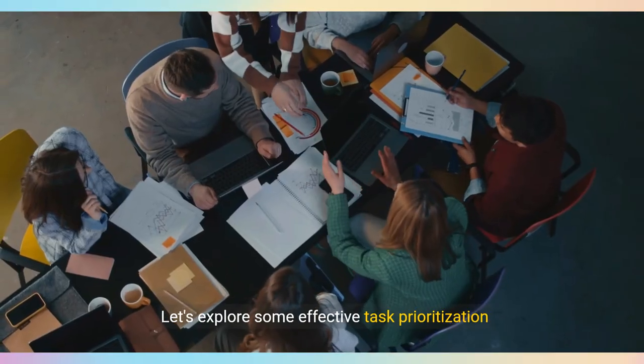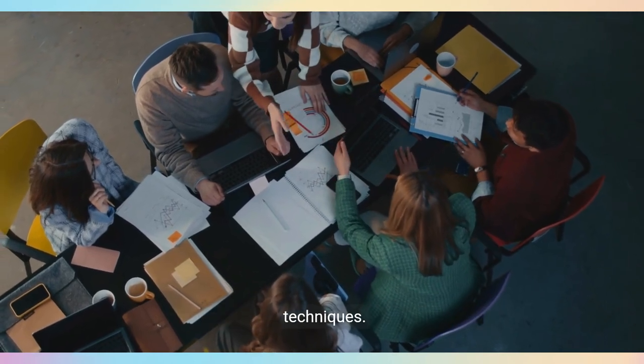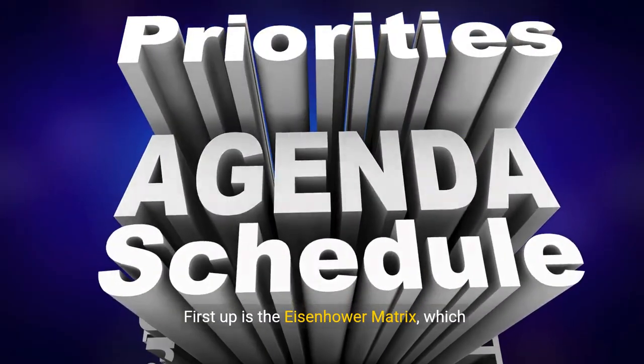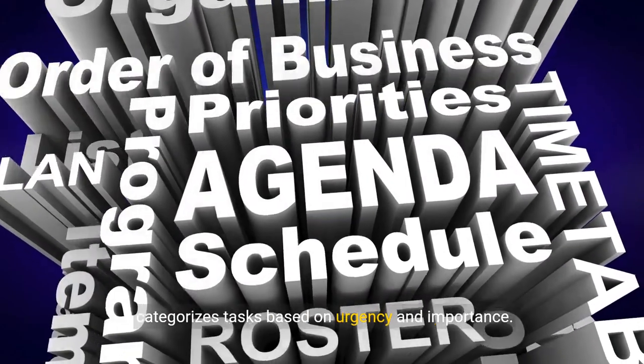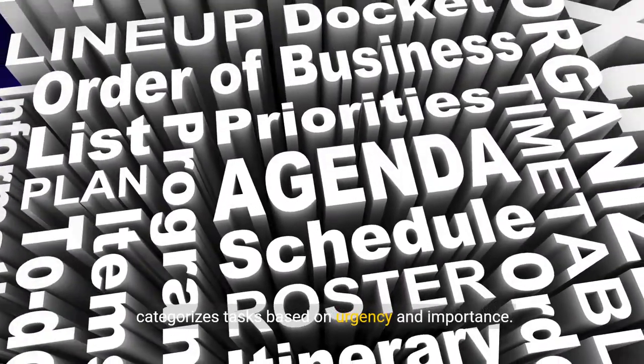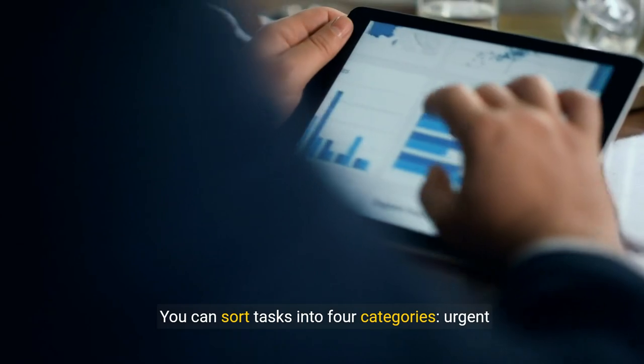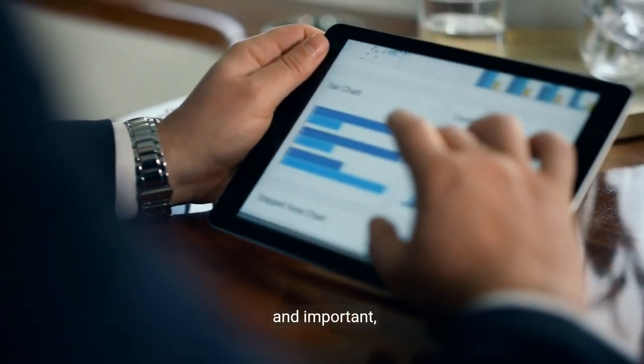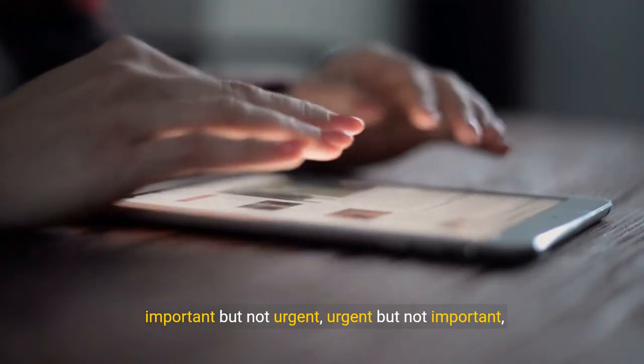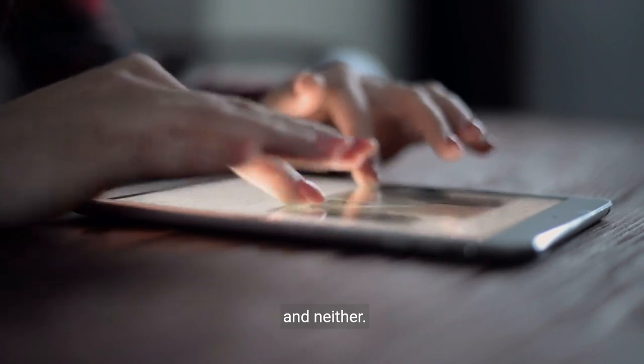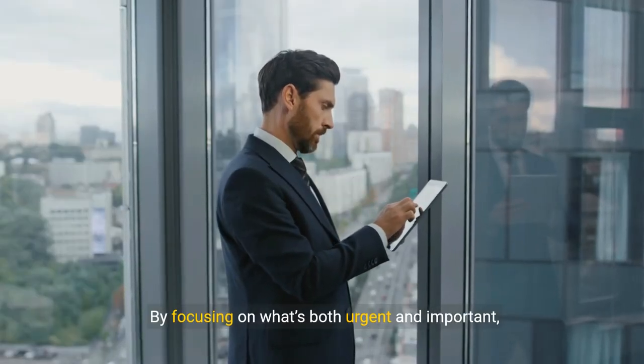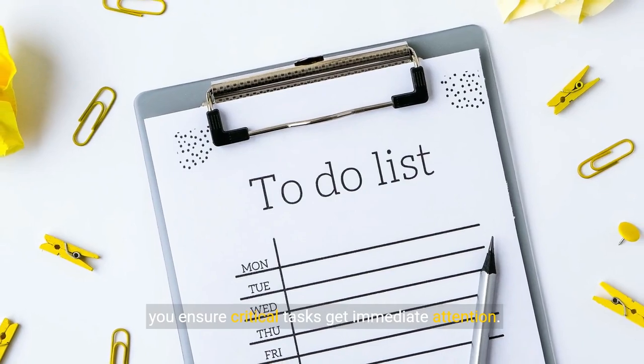Let's explore some effective task prioritization techniques. First up is the Eisenhower matrix, which categorizes tasks based on urgency and importance. You can sort tasks into four categories: urgent and important, important but not urgent, urgent but not important, and neither. By focusing on what's both urgent and important, you ensure critical tasks get immediate attention.